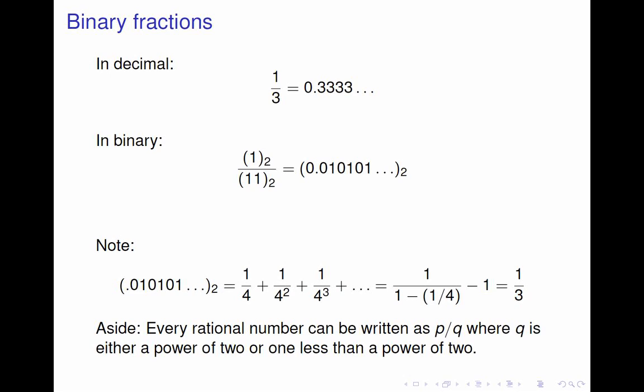Now, there's an interesting aside here, which is that every rational number can be written as p/q, where q is either a power of 2 or 1 less than a power of 2. That's not going to come up at all in the rest of the class, but it's something I've always thought was a curious fact.